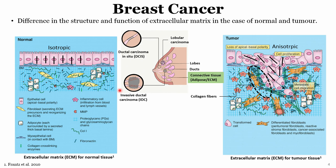Tumor tissue is tissue which has still not spread through the other parts of the breast and through the body via the lymph nodes. It is basically very anisotropic, arranged in a very random and unorganized manner.